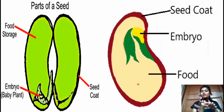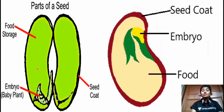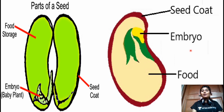Think of the seed coat as the outer covering, like a hand, and the cotyledon as the inner part inside it. The cotyledon stores food for the baby plant. The baby plant itself is the embryo, as you can see marked in the picture.